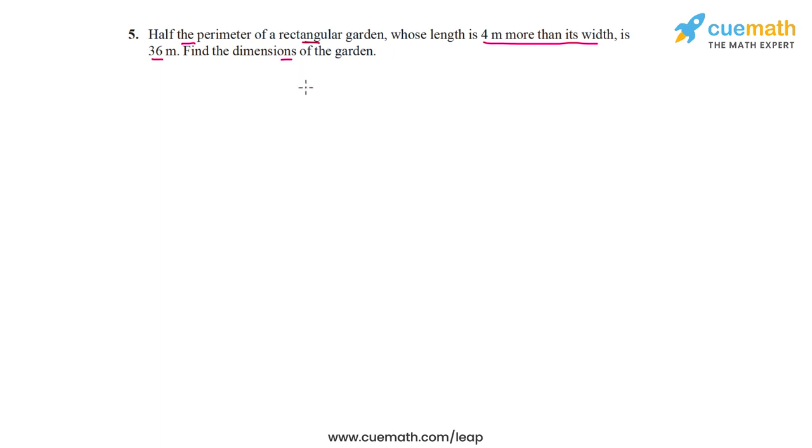The unknowns in this problem are the dimensions of the garden — specifically the length and the breadth, since it's a rectangular garden. Using the information given, we have to set up a pair of linear equations in these two unknowns and graphically solve the pair to find those unknowns.